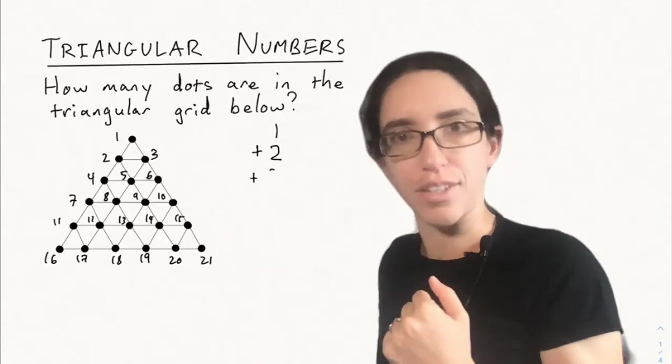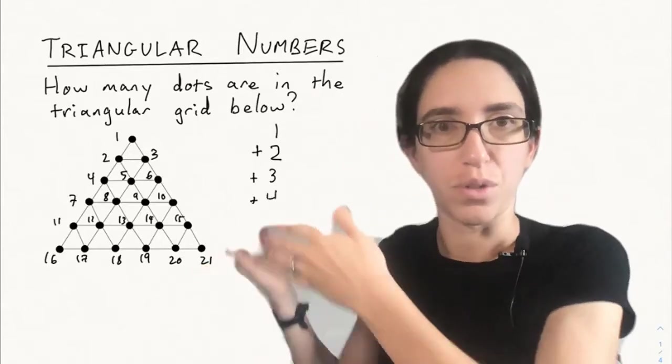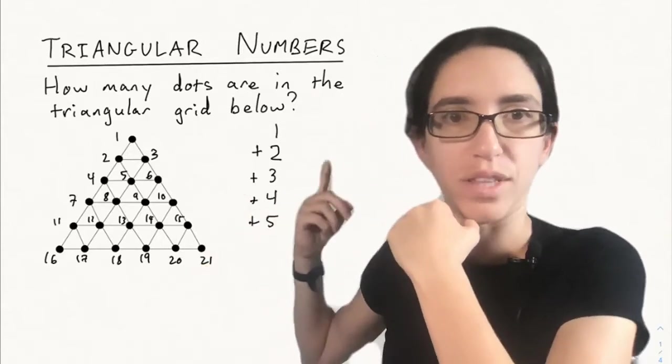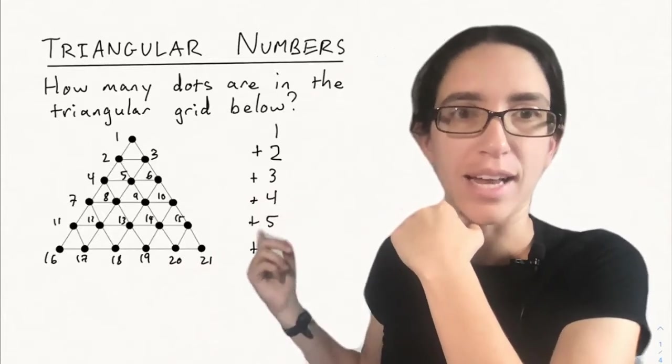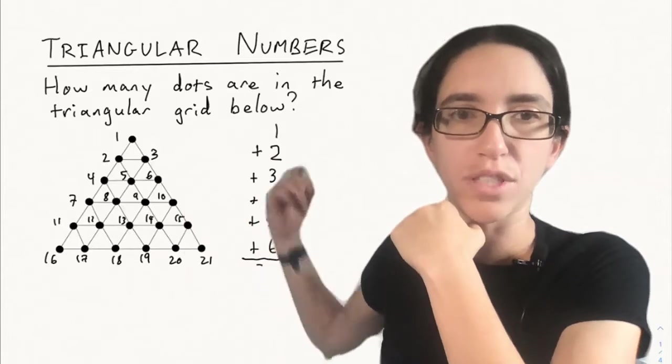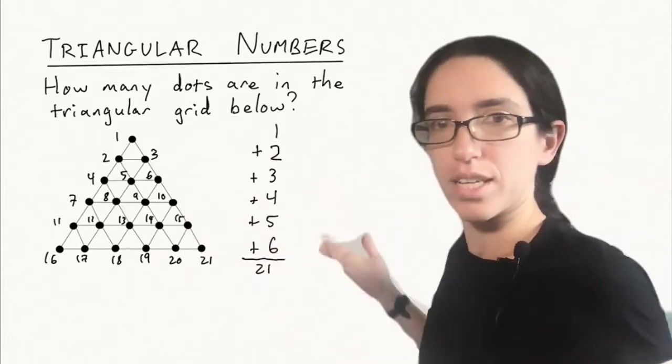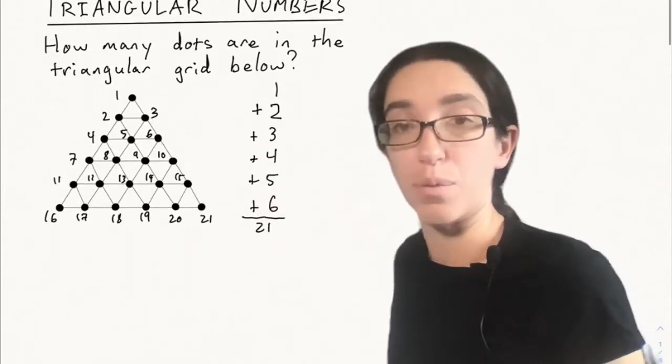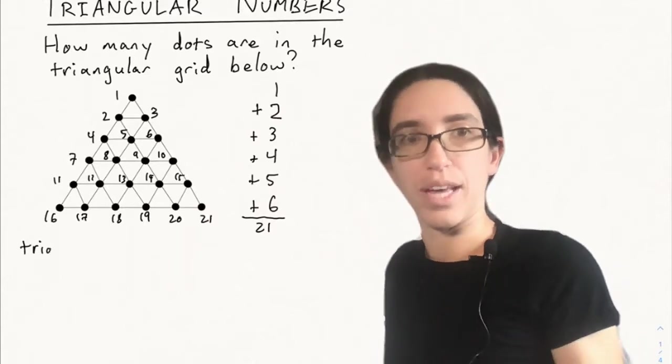So another way of organizing our work is counting them by row. There's one dot in the first row, then two in the next row, and three in the row after that. Every row contains one more dot than the previous row, so we could have just added up the numbers from one to six here. And again, we would get 21 if you compute that out.